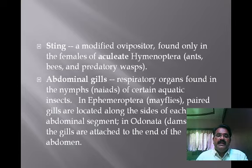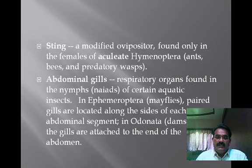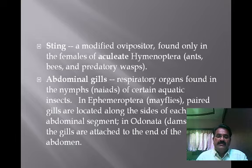Abdominal gills are respiratory organs found in the nymphs — that is, the naiads — of certain aquatic insects. In Ephemeroptera (mayflies), paired gills are located along the sides of each abdominal segment. In Odonata (damselflies), the gills are attached to the end of the abdomen.